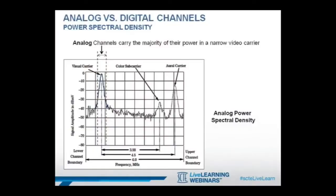Traditionally, cable operators have been measuring analog leakage using equipment specifically designed for detecting analog carriers. From a technology perspective, this was achieved by using a narrow 25 kHz measurement bandwidth, which provides the benefits of high sensitivity and noise immunity.